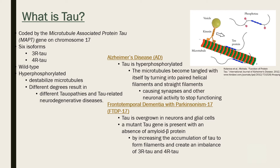When tau hyperphosphorylates, microtubules are destabilized, causing distortion in the shape of the neuron and changing its function. There can be different degrees of hyperphosphorylation, relating to a variety of tauopathies and tau-related neurodegenerative diseases.